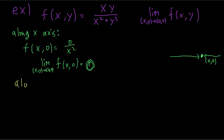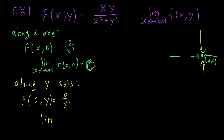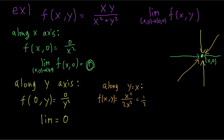Now let's try approaching along the y-axis. Along the y-axis, the x-value is always equal to 0. If we plug in 0 for x in this function, then we get this, and the limit is still equal to 0. So far, we have two paths which have the same limit of 0. But that's not enough to say that the limit exists. So we're going to keep trying more paths. Let's try approaching along the line y equals x. Along this line, we can replace all the y's with x's, which gives us a result that is always equal to 1/2.